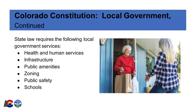Public safety — including law enforcement, courts and jails, fire protection districts, and emergency management services, among others — and local school districts and school boards, with general supervision provided by the State Board of Education. Local government funding to provide these services comes from a variety of sources, including property and sales taxes, and a portion of state taxes, such as gasoline taxes.